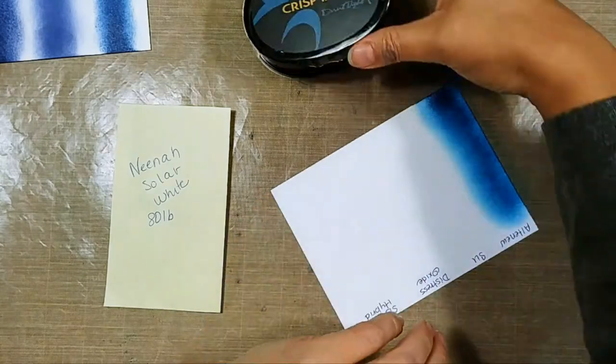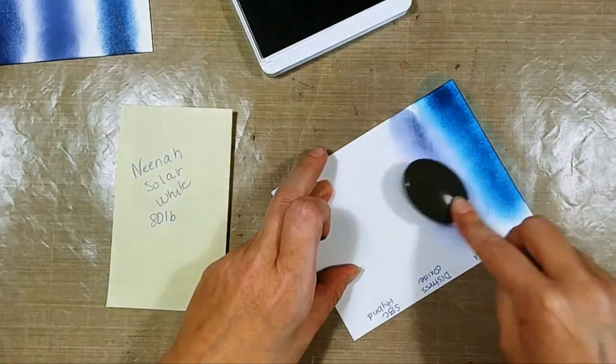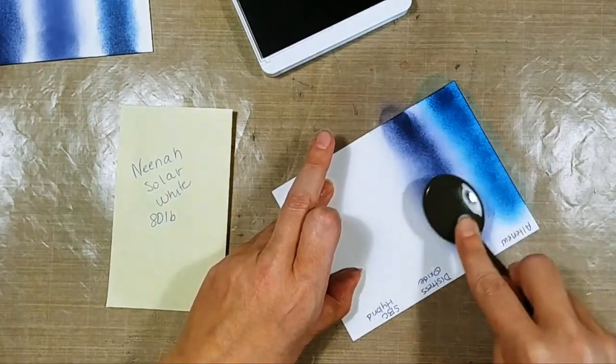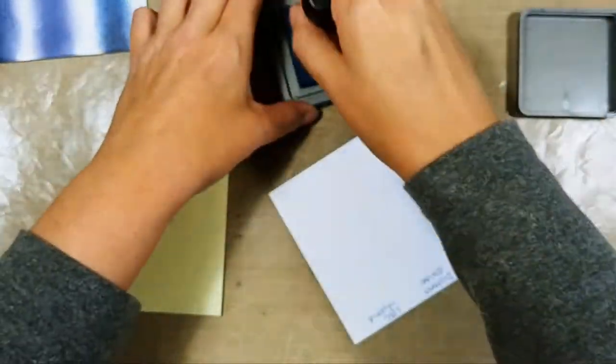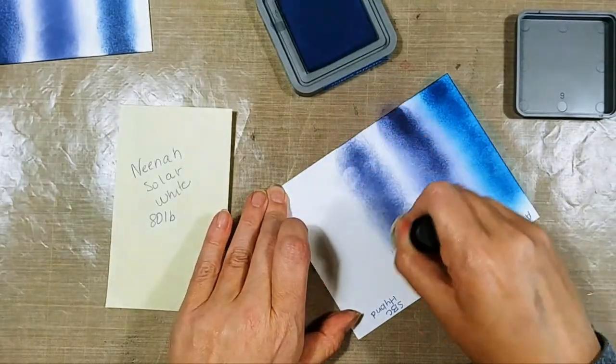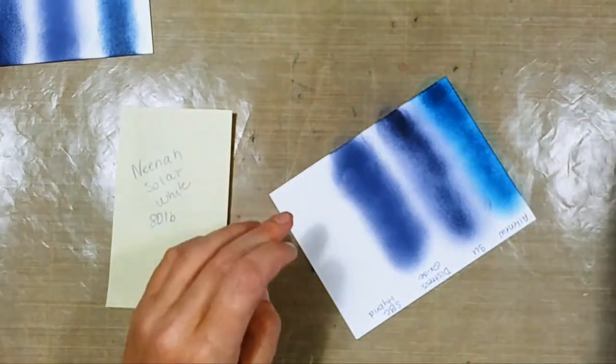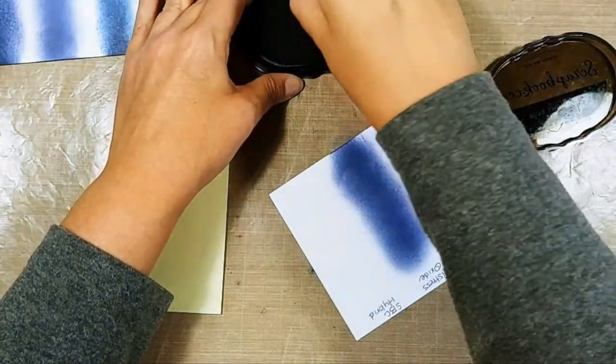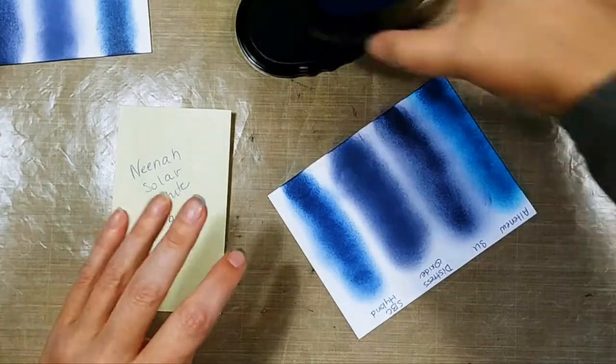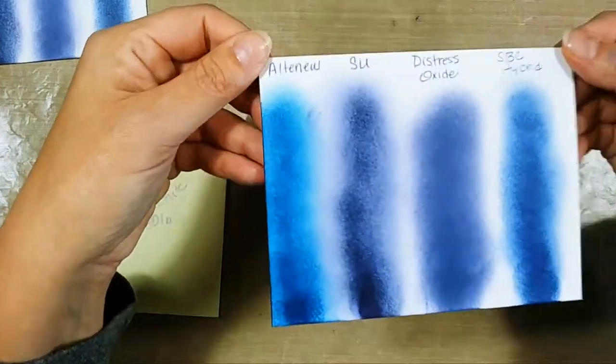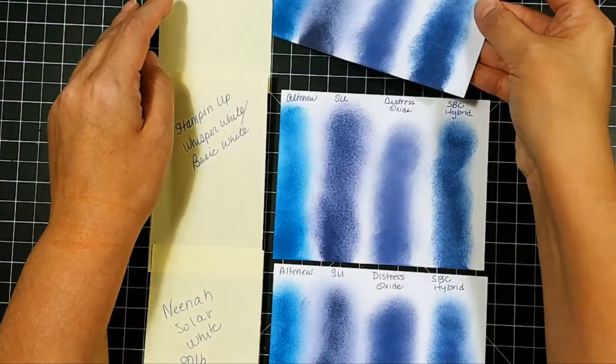A couple things to note as you are ink blending: the more you use an ink blending tool, especially like a sponge, the better your results are going to be. For brushes, the ink generally doesn't stay in those. It stains the bristles of the brush, but the ink doesn't set in them like it does with a sponge. So the more you use it, it doesn't build up that ink like a sponge does. That's probably the main difference that I have seen. You're going to get a different look with both of those blending tools, and it's going to depend on the look that you're going for.